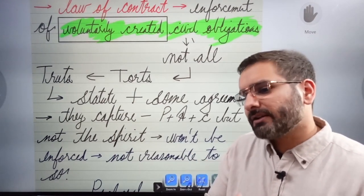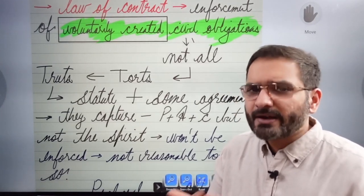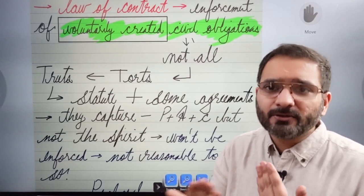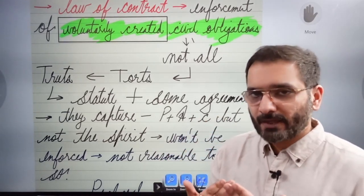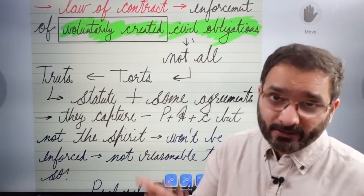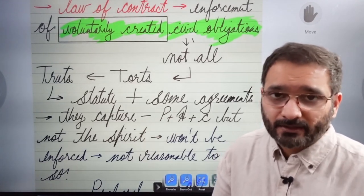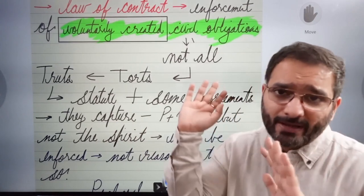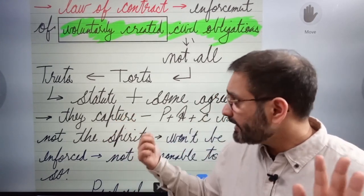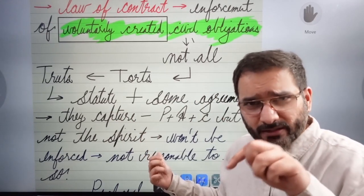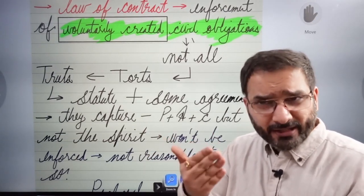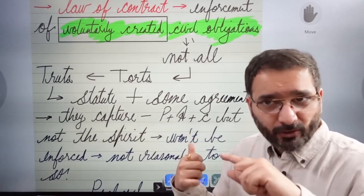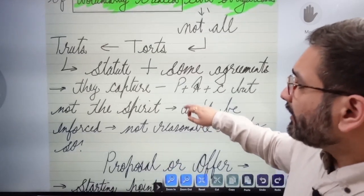For example, your friend WhatsApps you saying 'come tonight, I'll host you for dinner,' and then cancels — or a friend borrows money casually promising to repay later. Did you intend to enter into legal consequences? That is the question. In England, loose talk is not equal to a contract — intention to enter into legal obligations is required.